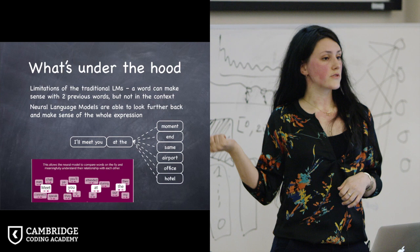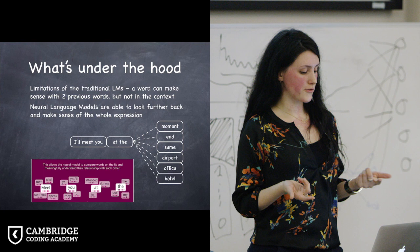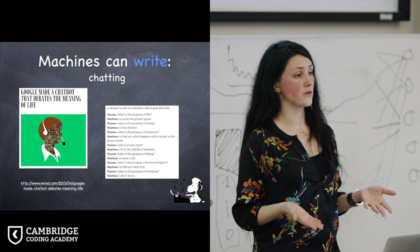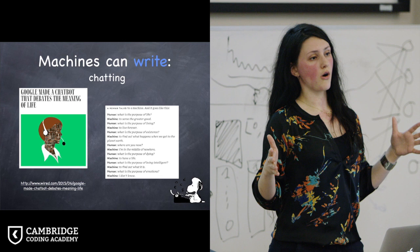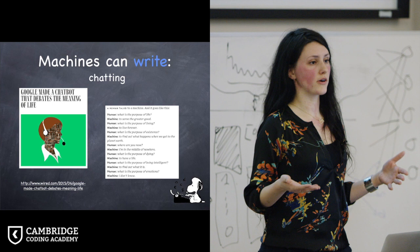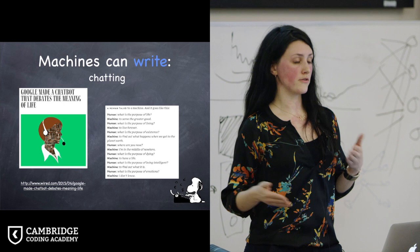Then another announcement from Google, quite recently, was that they now have a chatbot that can argue the meaning of life with a human. For example, if you write something like, what is the purpose of life? It would say, to serve the greater good, and so on. The way this system works is, again, it learns from a big number of data, a big number of different combinations and sentences it has seen before, and it knows which sentences are the most probable continuations of the conversation.